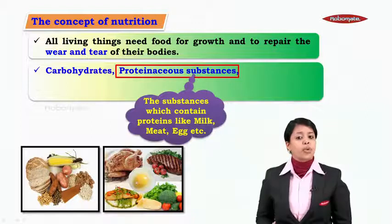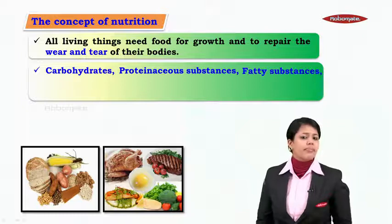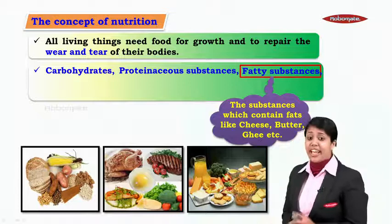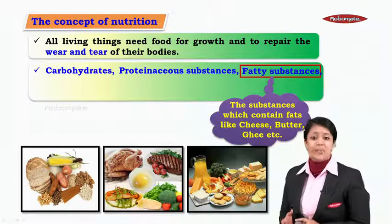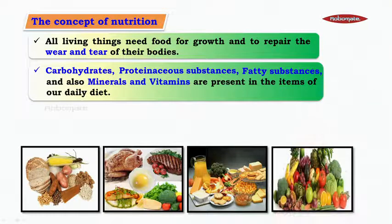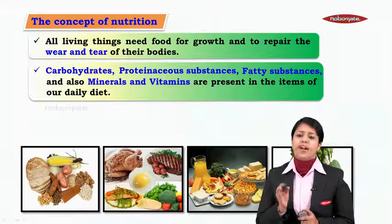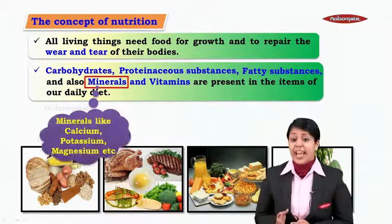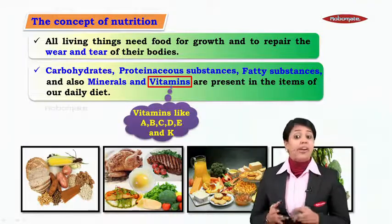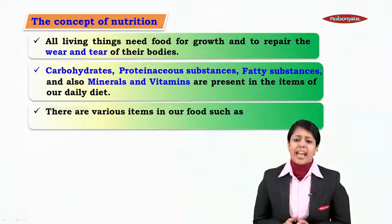Our food contains carbohydrates, proteinaceous substances, and fatty substances. Proteinaceous substances are those which contain proteins — like milk, meat, and eggs. Fatty substances contain fats, like cheese, butter, and ghee. Minerals such as calcium, potassium, and magnesium, and vitamins A, B, C, D, E, and K are also present in our daily diet.